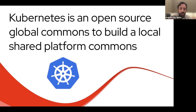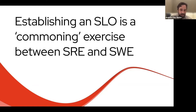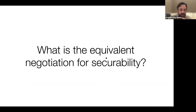Kubernetes is this open source global commons to build local shared platform commons. If you're familiar with SLOs — I said I was going to borrow from reliability and drag it back — the SLO process is this commoning exercise, this negotiation between software engineers and SRE about what the service level should be. Are we willing to invest ten times more to get to the next nine for the service level, based on the value we're creating? So what's the equivalent negotiation for 'securability'?